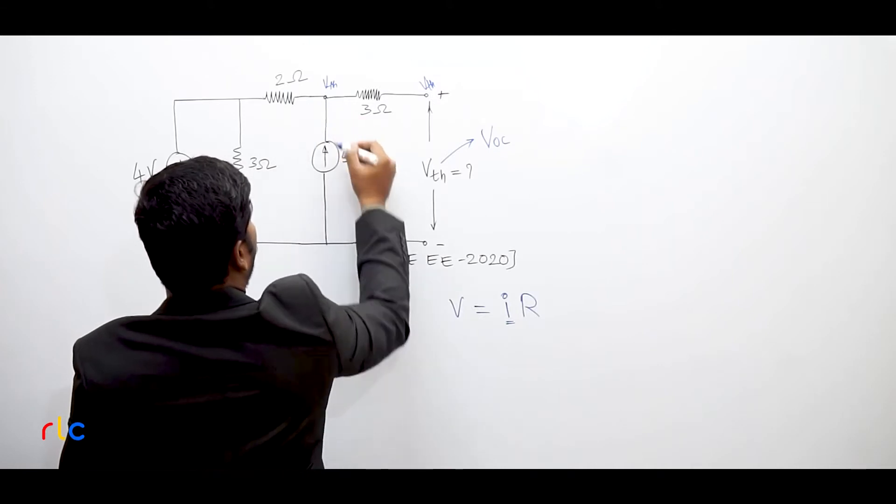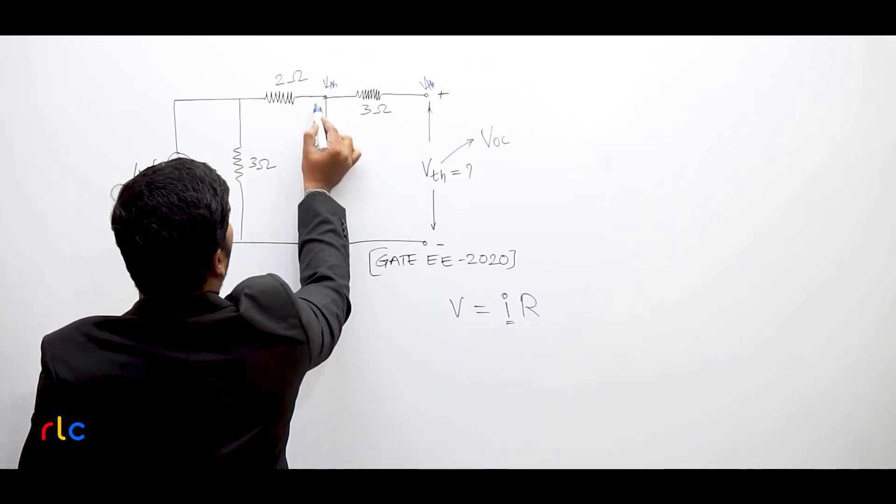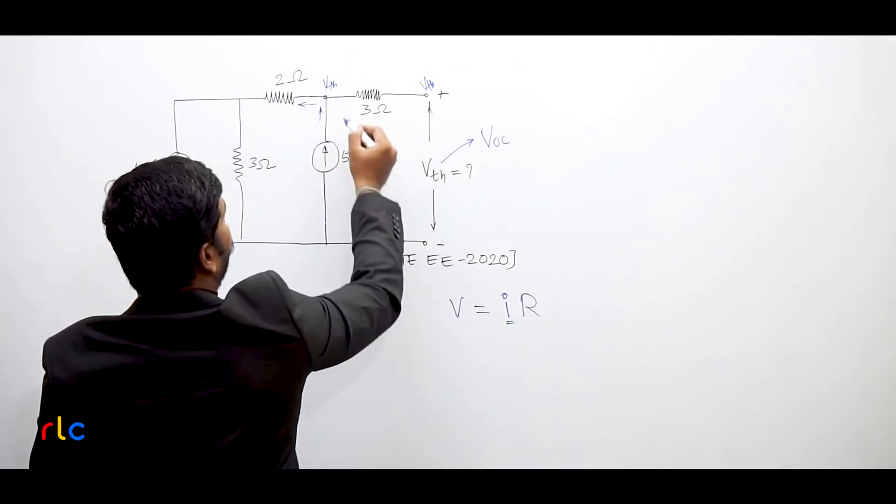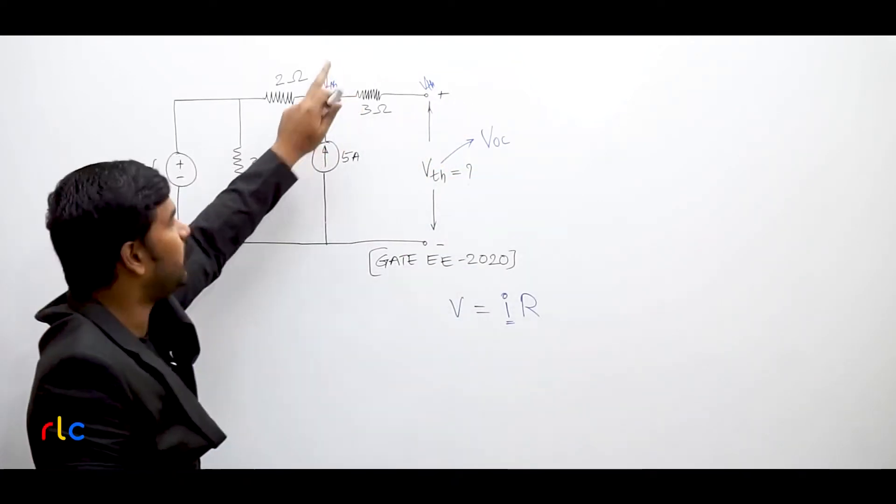Suppose you are sending some current. This 5 amp current will go to this node and again it will travel back here. It will not go. That means this 3 Ohm branch does not carry any current, therefore no voltage drop. Whatever voltage here, here is the same voltage.